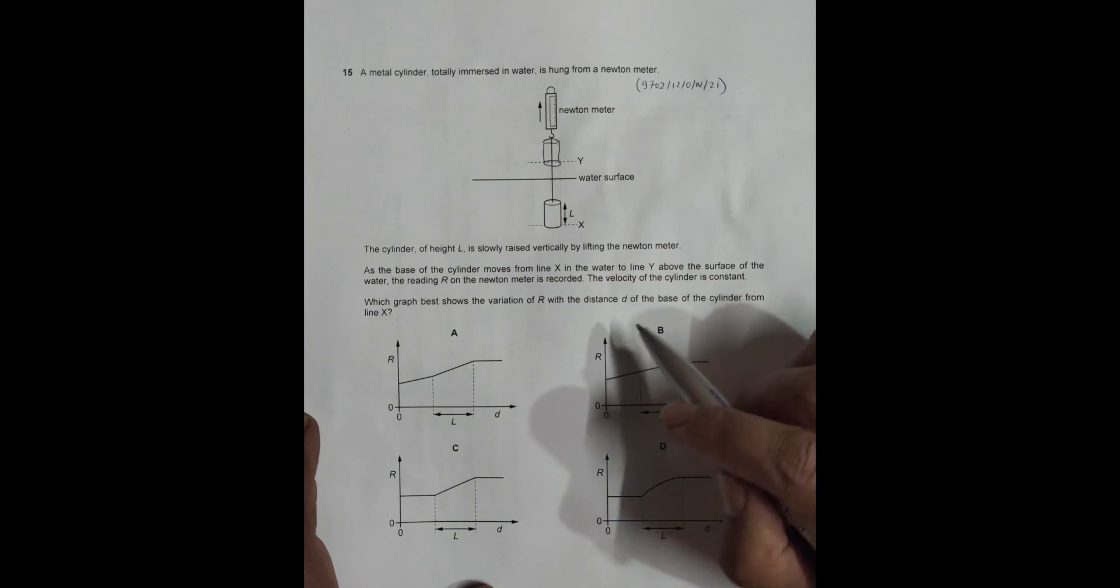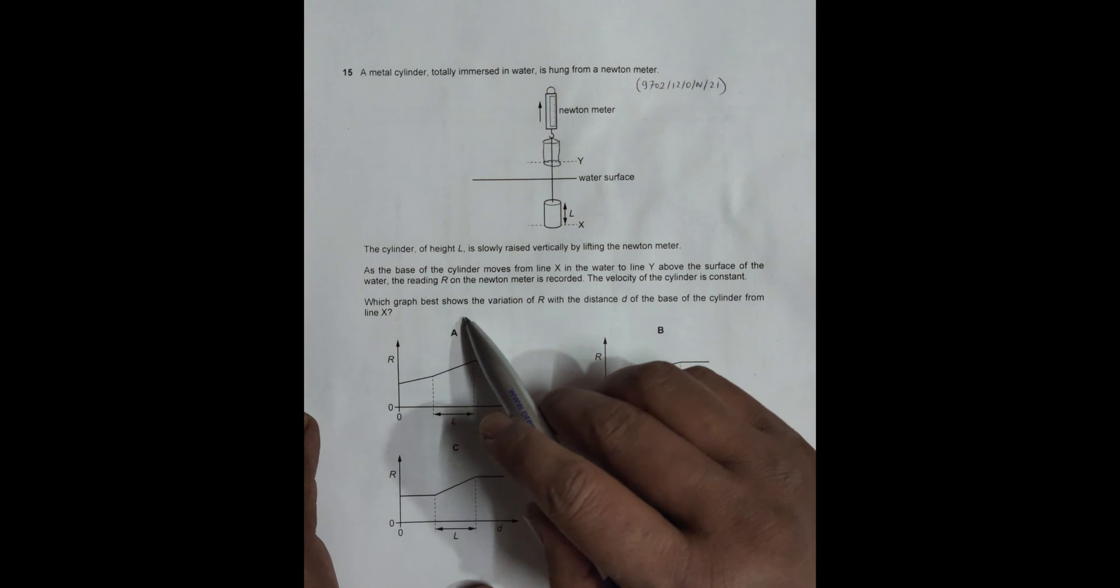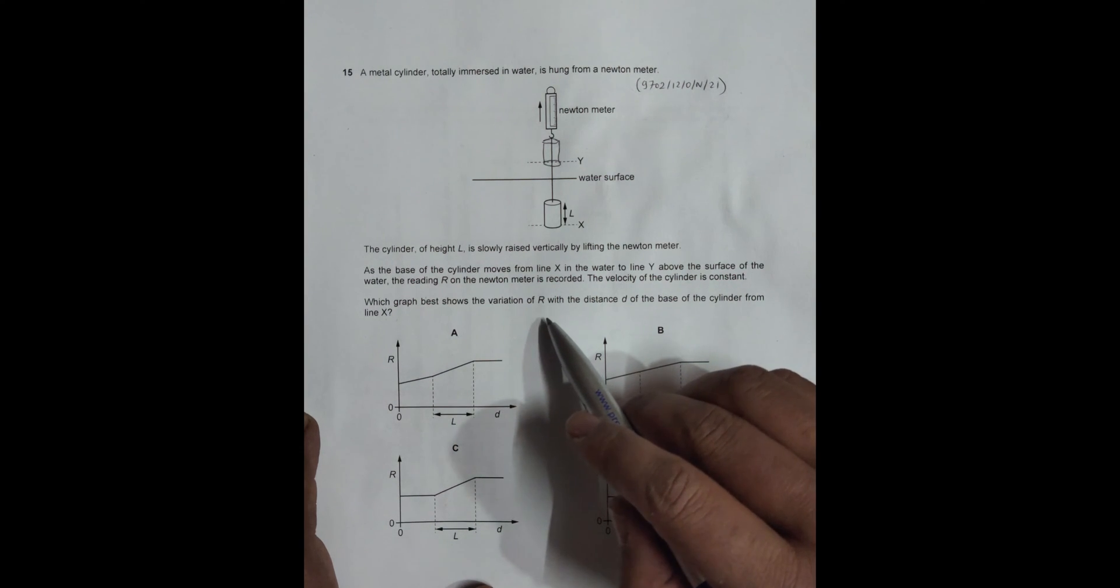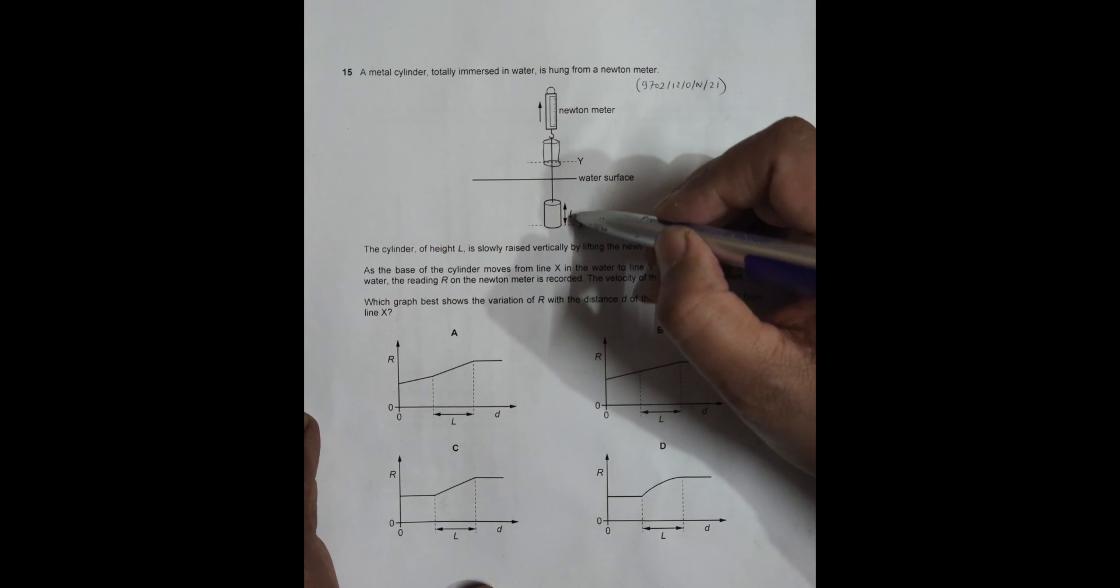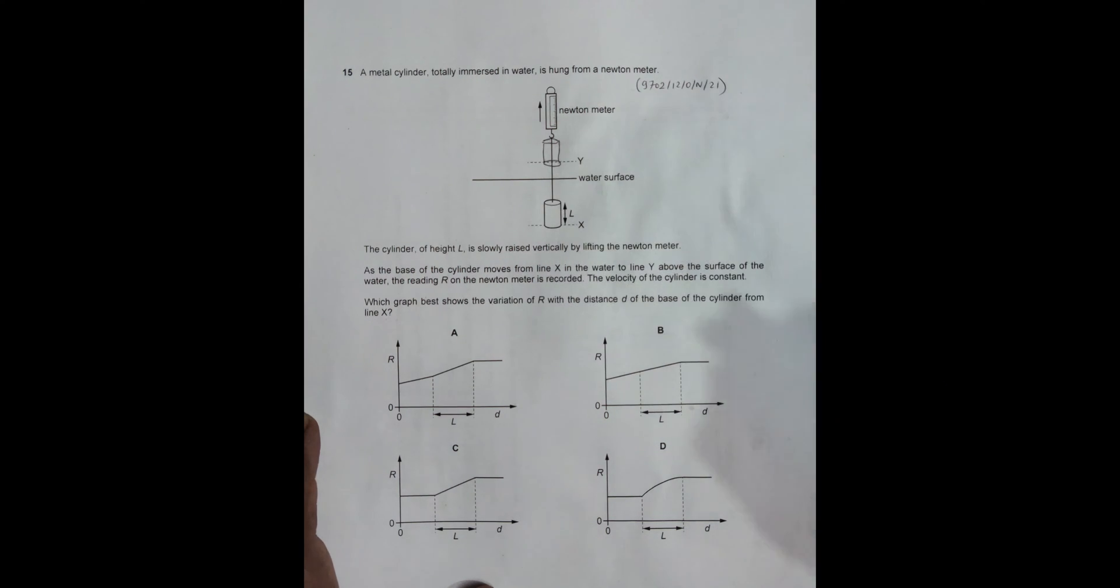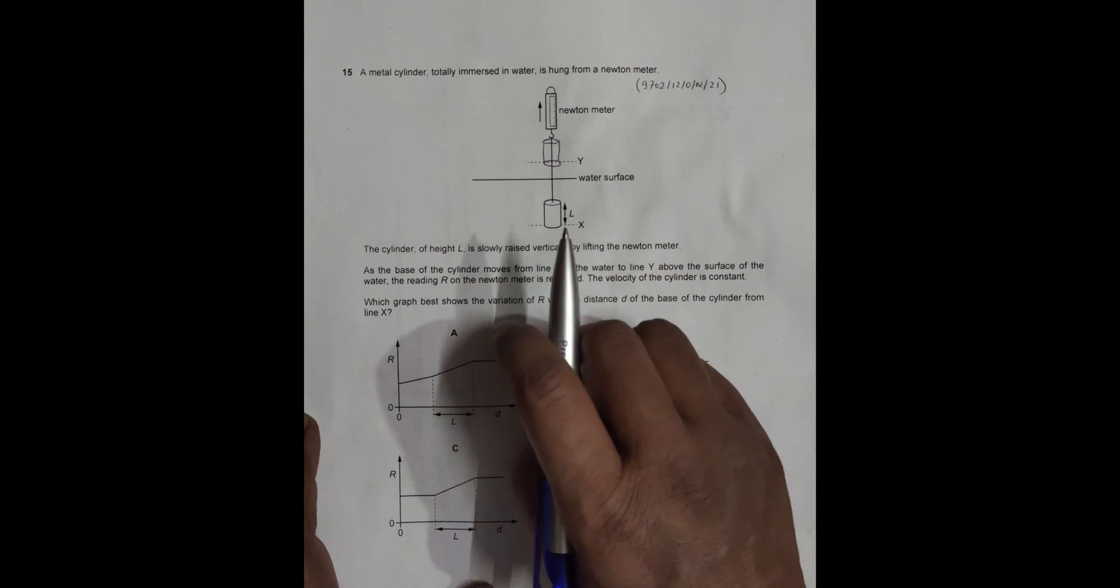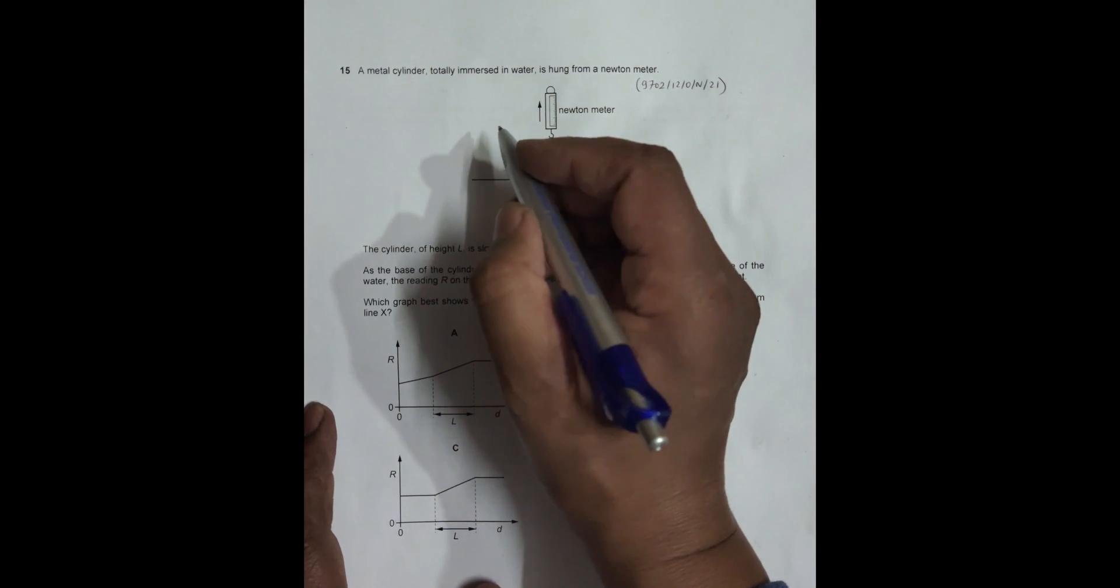Which graph basically shows the variation of R with the distance D of the base of the cylinder from X? So as it moves from X, D varies, so we have to find the variation of R.